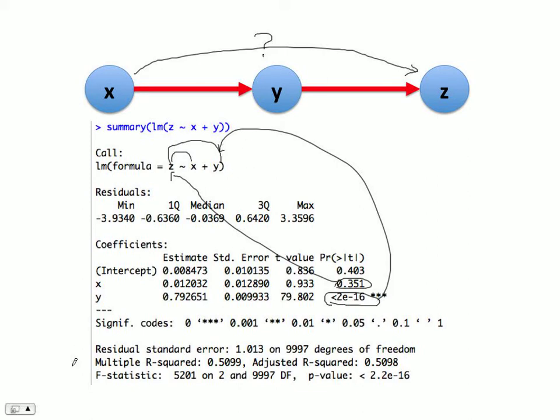So basically, when y is controlled, this is what we mean. When y is controlled, the correlation between z and x is not significant. When x is controlled, the correlation between y and z is still highly significant.